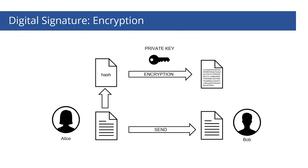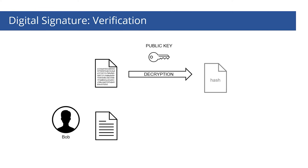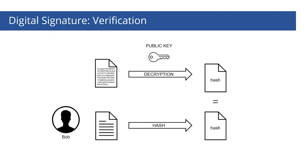Signature verification occurs as follows. Bob receives Alice's message and decrypts the signature with Alice's public key. As a result, he gets the hash sum that Alice encrypted. Then Bob calculates the hash of the message he received from Alice and compares the two hashes. If they are identical, he knows that it was Alice who signed it. The cornerstone idea of this scheme is that only Alice's public key can decrypt the signature. If Bob cannot decrypt it, it means it's not Alice's signature. Or he decrypts it but the hashes do not match, which means Alice signed another message — she could accidentally have sent a wrong file, or someone tampered with the message along the way.